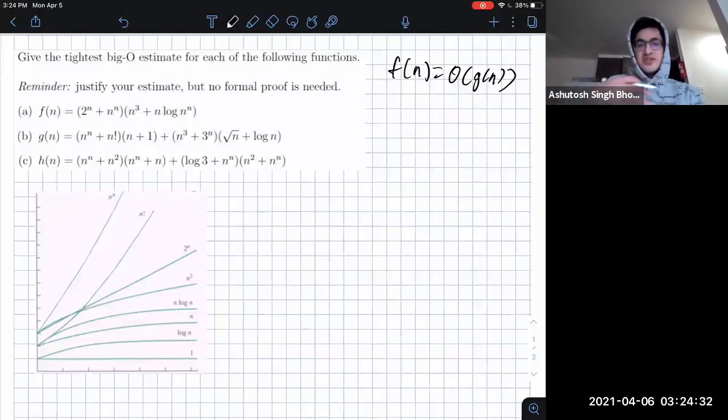So g of n could theoretically be this gigantic huge function that nothing surpasses, but that's not very practical. So we say tightest big O estimate, which means what is the smallest function g of n such that f of n is O of g of n.